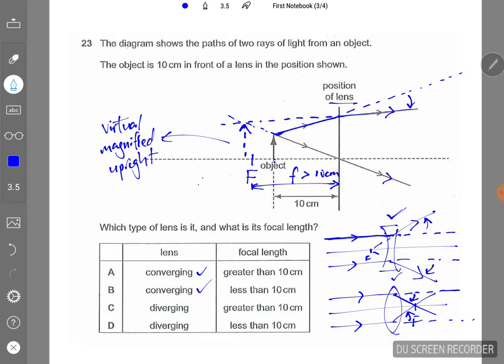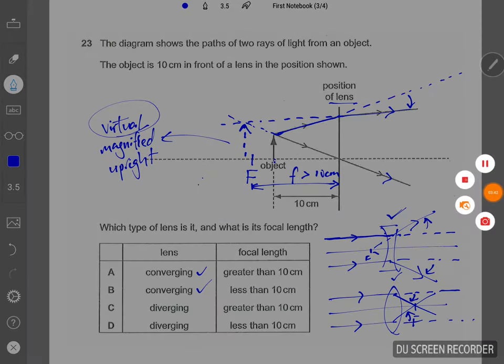For the combined science question, they actually ask you what kind of image is formed, so you know that the image form is virtual. So that's how you solve the question.